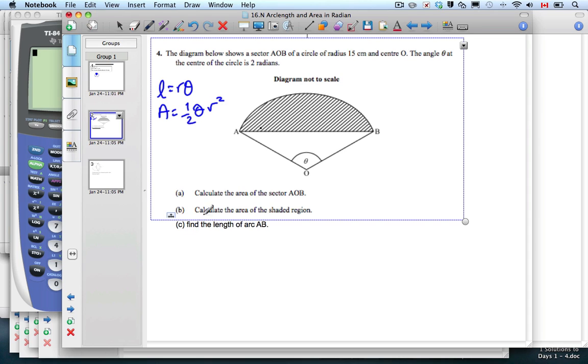We're asked to calculate the area of the sector AOB. We have this whole sector here where the radius is 15 and the angle theta is 2 radians. So area equals one half times 2 times 15 squared.